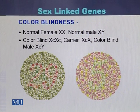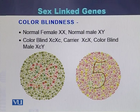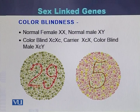Color blindness affects those individuals who cannot distinguish between green and red color. If we show them Ishihara test figures, they cannot identify that there is the number 5 written on one diagram and they cannot identify the number 29 written on another diagram. So color blind individuals cannot identify or distinguish between green and red color.